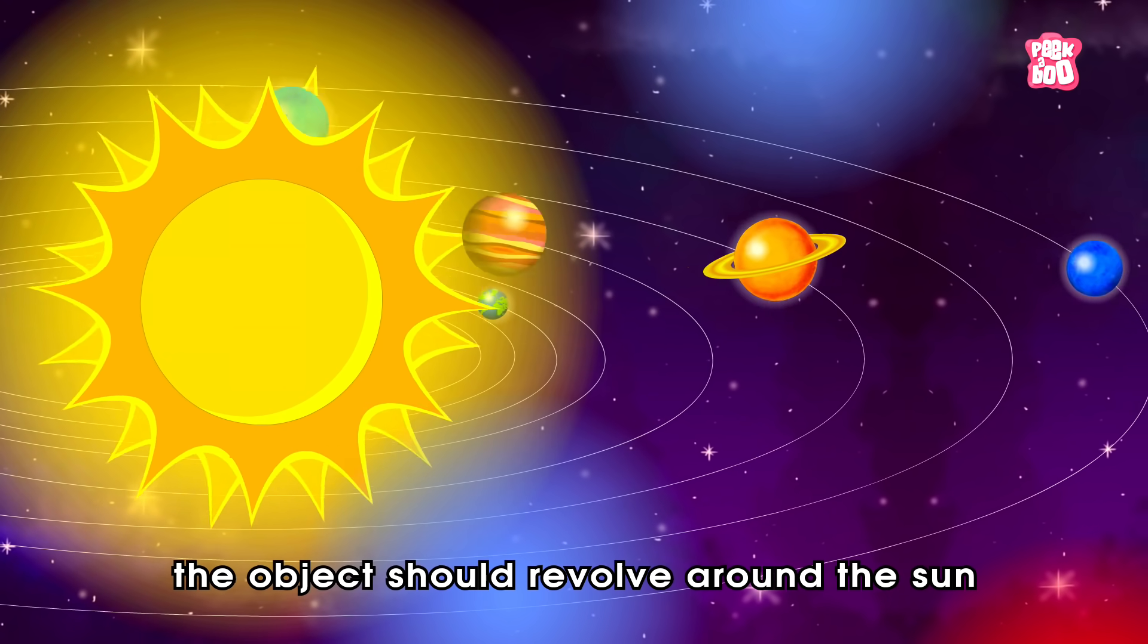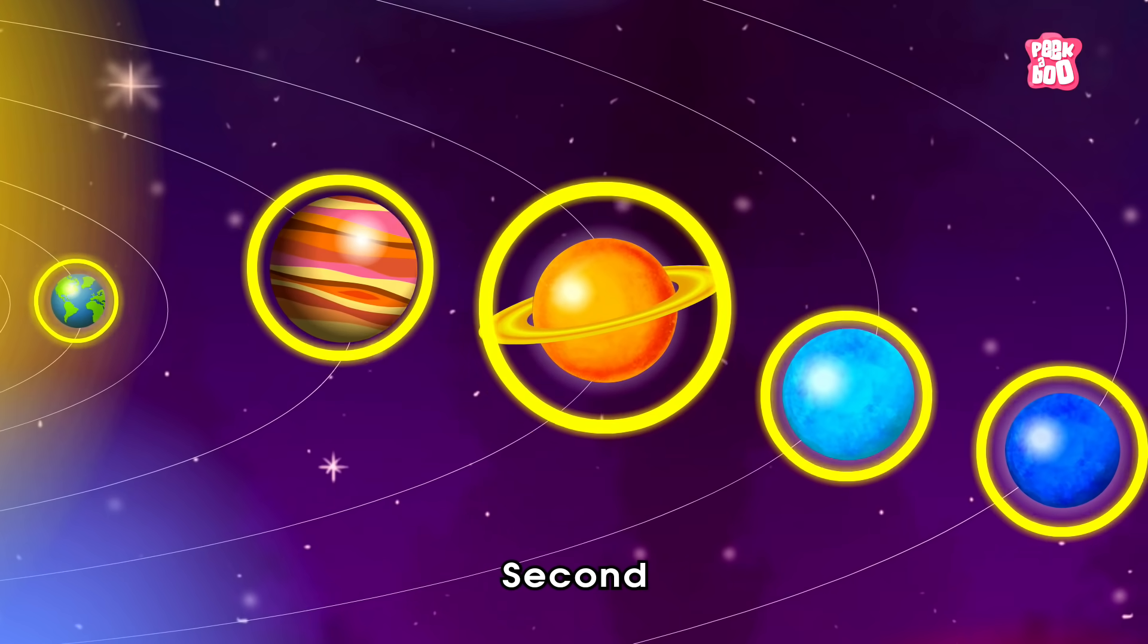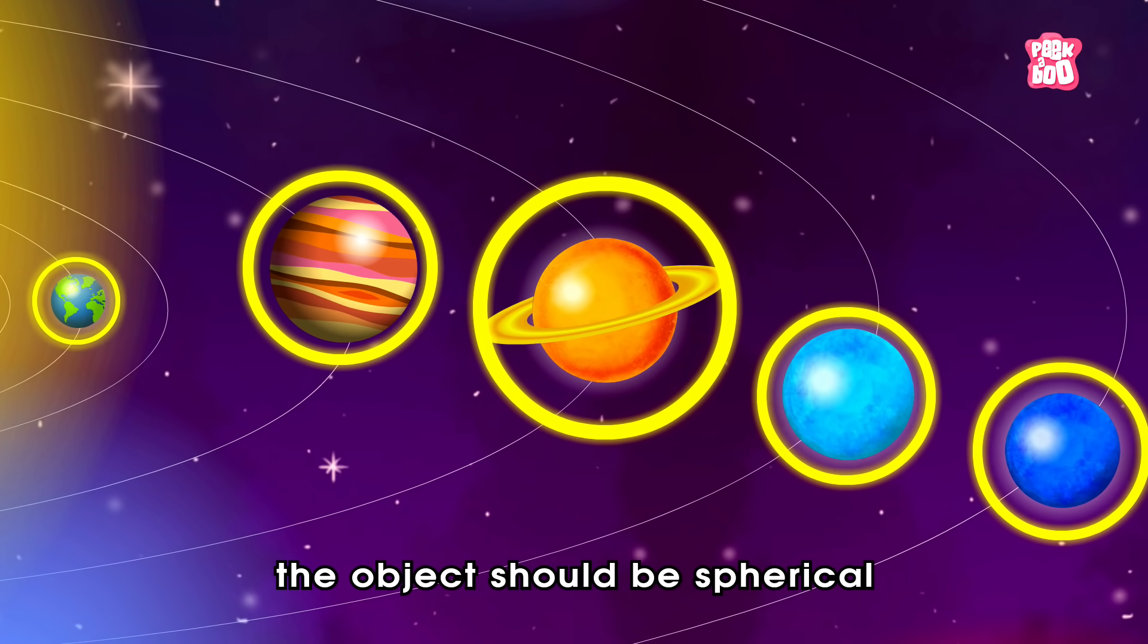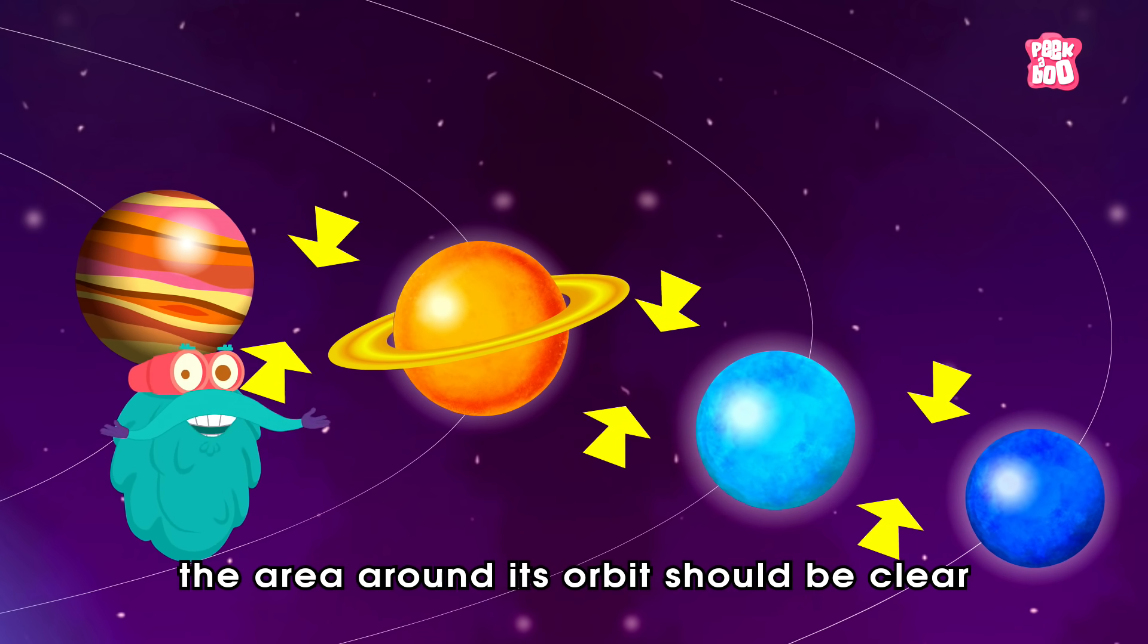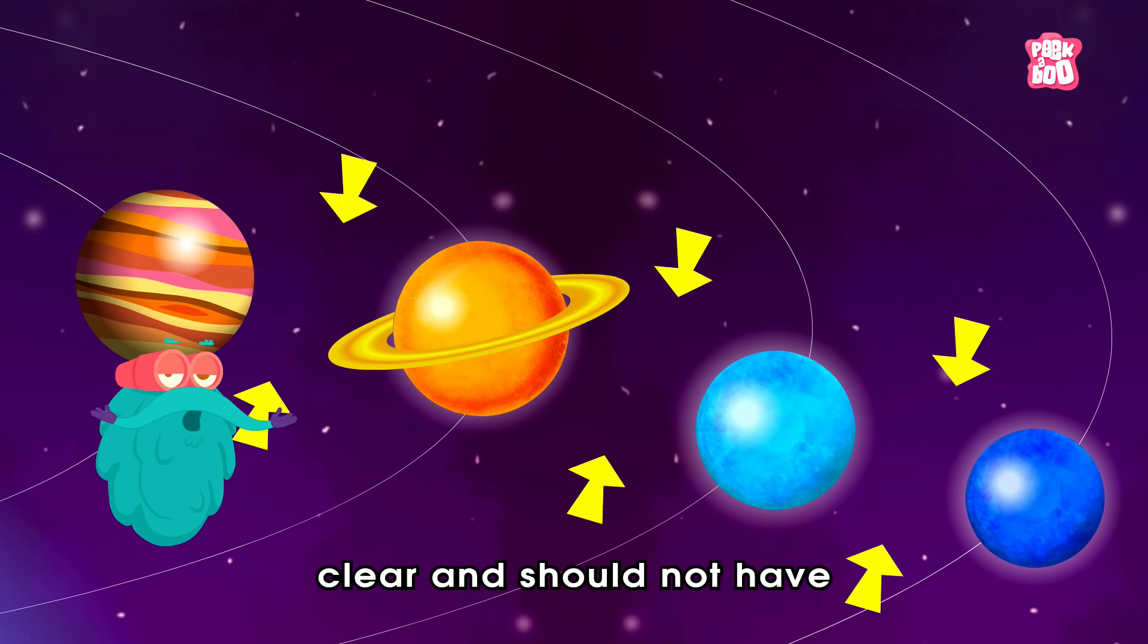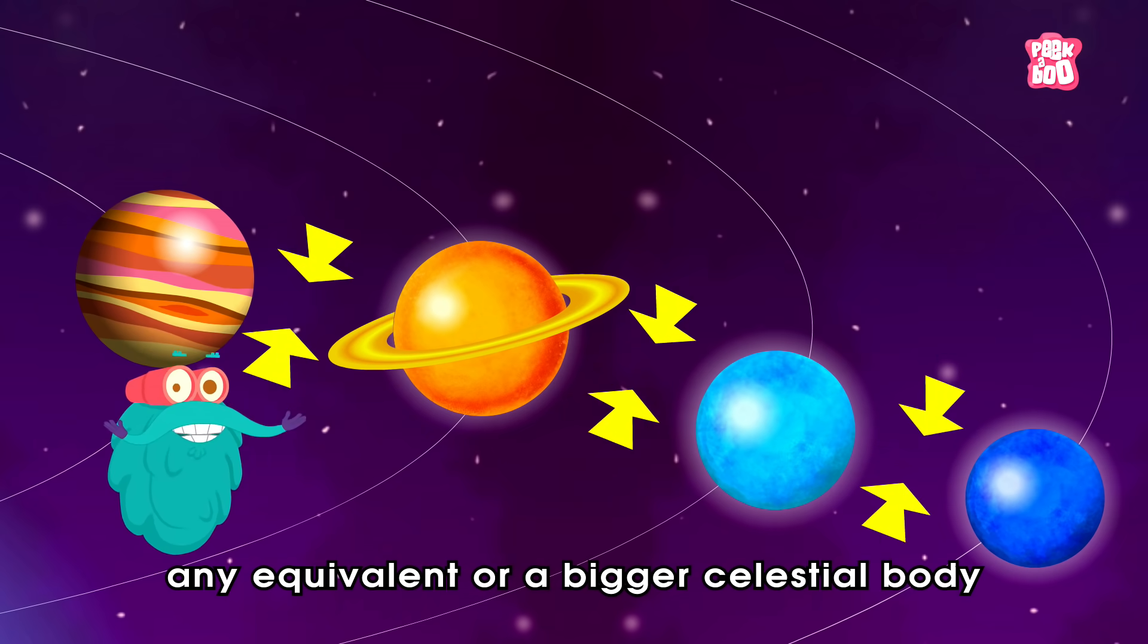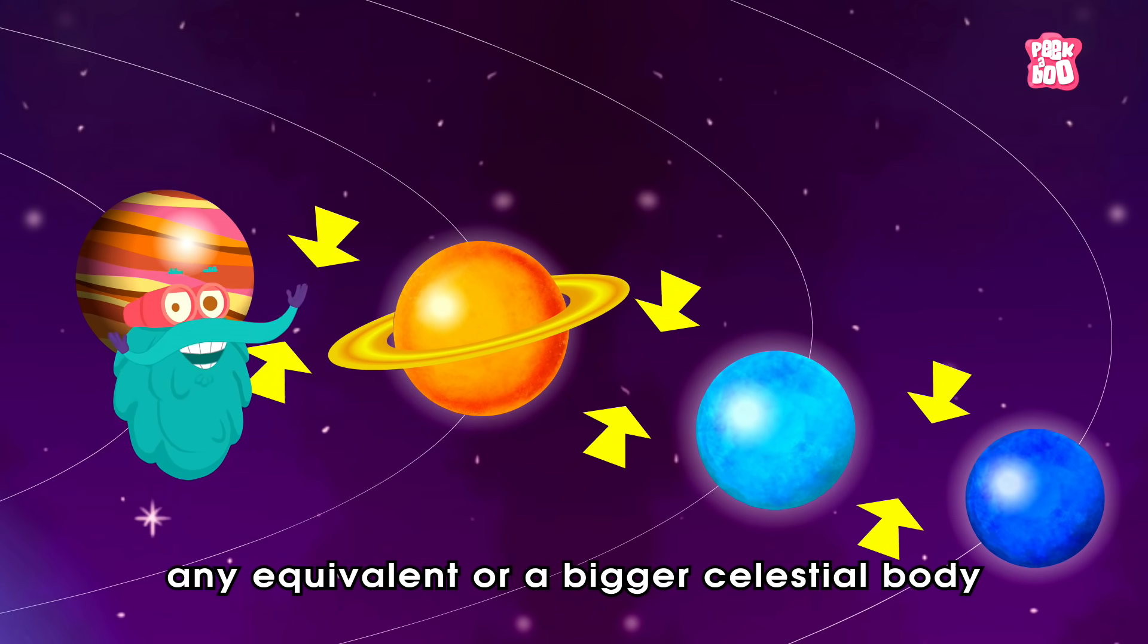First, the object should revolve around the sun. Second, the object should be spherical. And thirdly, the area around its orbit should be clear and should not have any equivalent or a bigger celestial body.